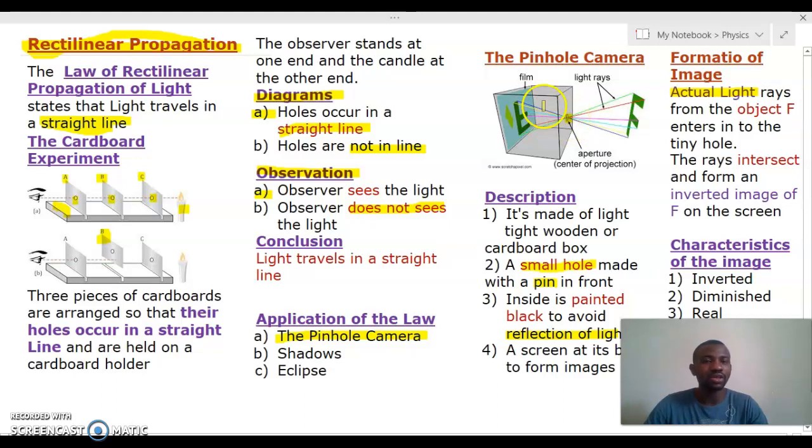So to see the form, normally we'll have to remove the shutter so you can see the image. The rays intersect and they form an inverted image. The image formed here is inverted. Take note, we have F as an object, but the image appears to be an inversion of the F.